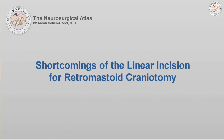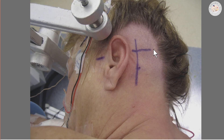Let's go ahead and review the positioning and the landmarks for a linear incision in this case. The landmark used for planning the incision involves a straight line from the inion to the posterior root of the zygoma.